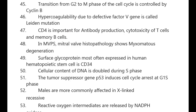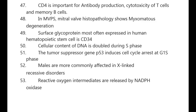Hypercoagulability due to defective factor 5 gene is called Leiden mutation. CD4 is important for antibody production, cytotoxicity of T cells, and memory B cells. In MVP, mitral valve histopathology shows myxomatous degeneration. Surface glycoprotein most often expressed in human hematopoietic stem cells is CD34. Cellular content of DNA is doubled during S phase.